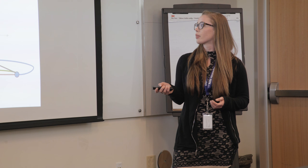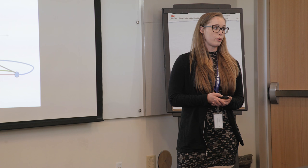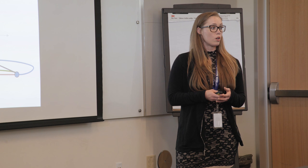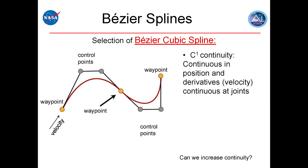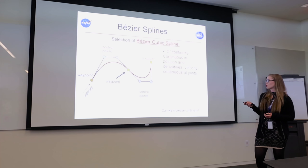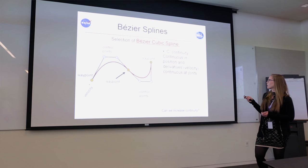Last year I worked with Bezier curves with four control points and C1 continuity. C0 continuity means continuous position. C1 continuity guarantees that the derivative at the joints will be continuous, meaning continuity in velocity. The yellow points represent waypoints — the trajectory passes through them — while the gray points are control points, which the curve is interpolated between, controlling the shape.